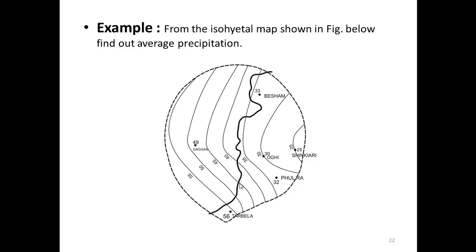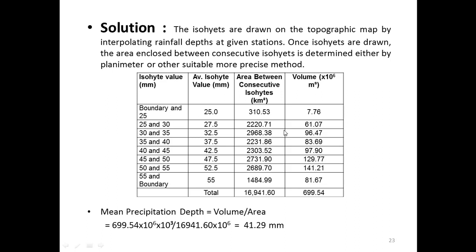Next example: From the isohyetal map shown in the figure, find the average precipitation. The stations are Dhagar, Bisham, Shinkari, Pulara, Barbara, and Ogi. To calculate average precipitation, we draw a table. The isohyets are drawn on the topographic map by interpolating rainfall depth at the given stations. Once isohyets are drawn, the area enclosed between consecutive isohyets is determined using a planimeter or other suitable method.